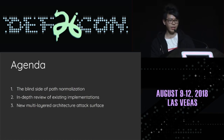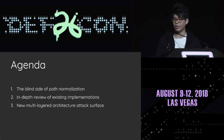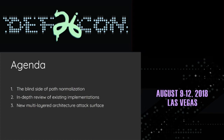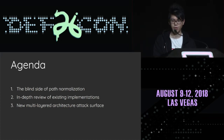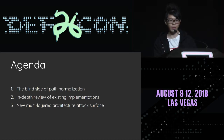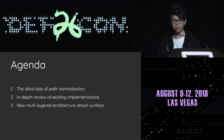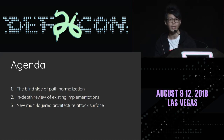This is our agenda today. We will first highlight the blind spots in path normalization and talk about why I focus on that. By knowing the blind spots, we try to review existing web frameworks and find bugs from them. We will show zero-days on both Ruby on Rails and Spring framework. Lastly, the new attack surface — and of course, to convince you this is awesome, we will give several bug bounty cases.